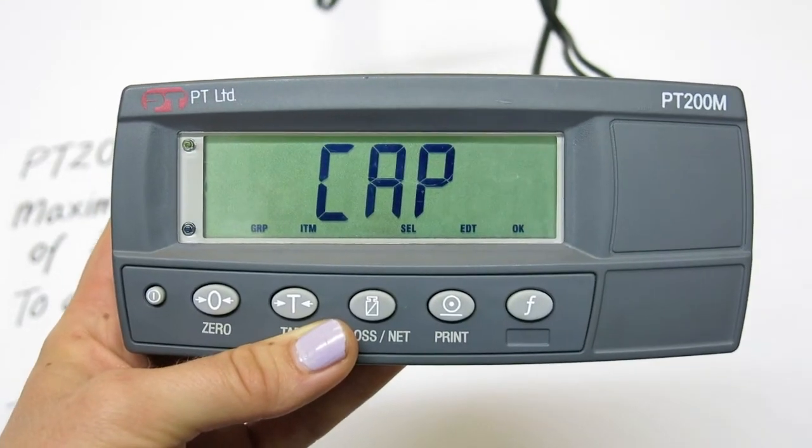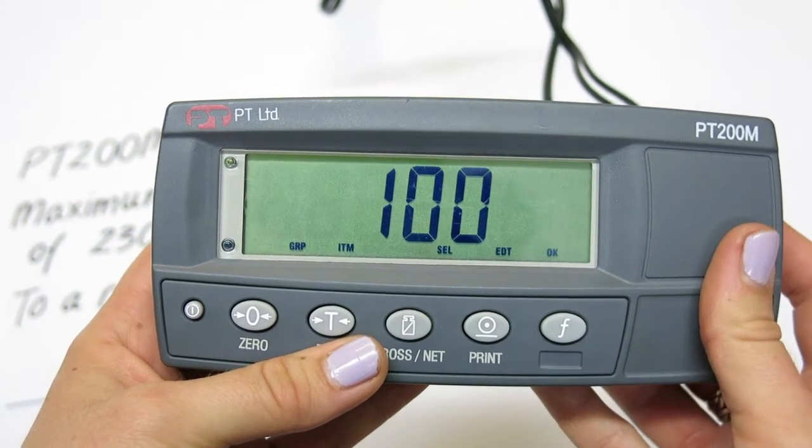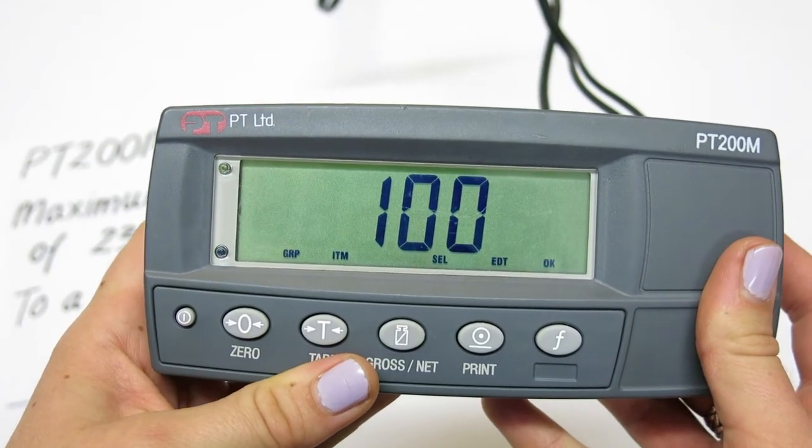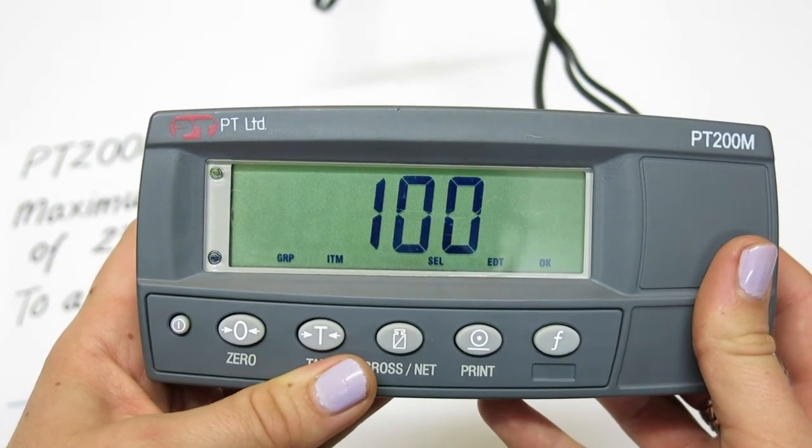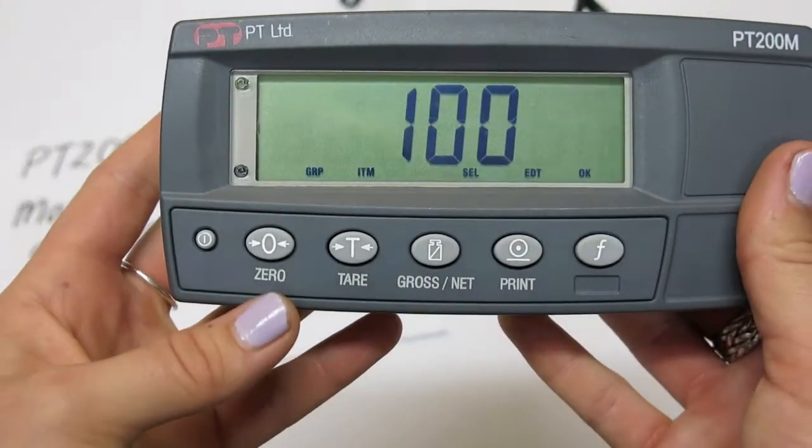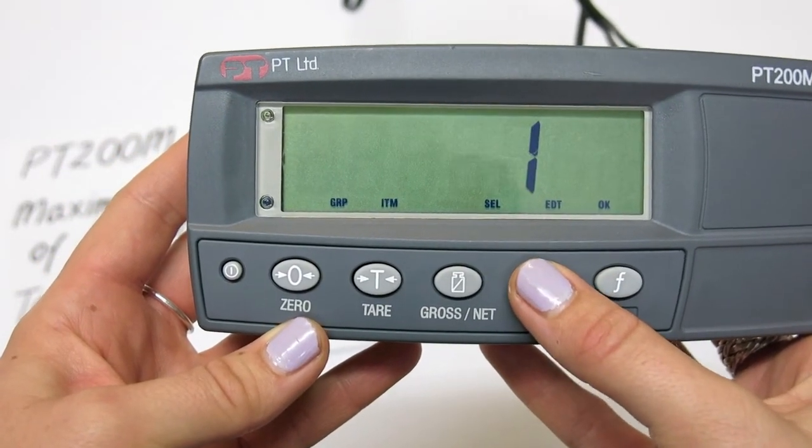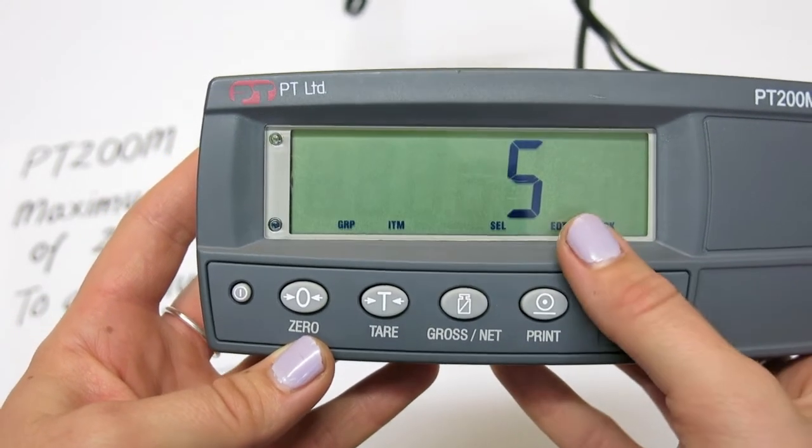The next parameter is resolution. This is the step number that the indicator counts by in the lowest digit of the value. So for our example, we want to count in steps of 5. Using edit to scroll and OK to select, find and accept 5 in the menu.